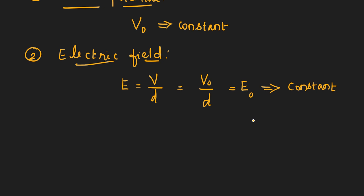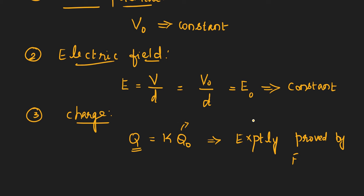Third one about charge. Here the charge actually increases by K times Q0. Q0 is the original charge. After inserting the dielectric it's going to increase by K times Q0. This is experimentally proved by Faraday. So the charge increases.